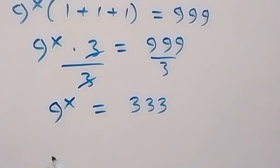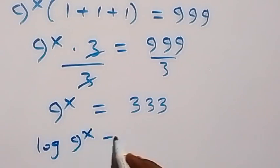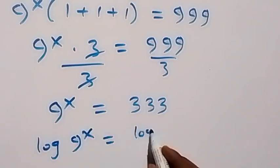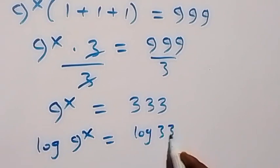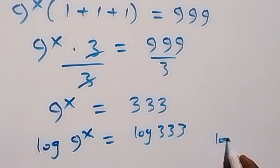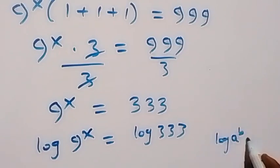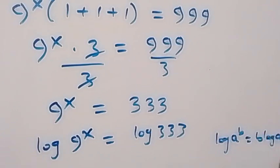When we take the log on both sides, we have log(9^x) equals log(3.33). Applying the power law of logarithms — when we have log(a raised to power b) we can write it as b·log(a) — that means x·log(9) equals log(3.33).